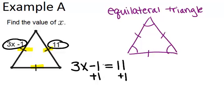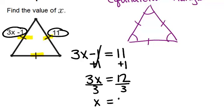So if we add 1 to both sides, we get 3x equals 12. So once we divide by 3, we end up with x equals 4, which is just what the problem was asking. Alright, let's go to example B.